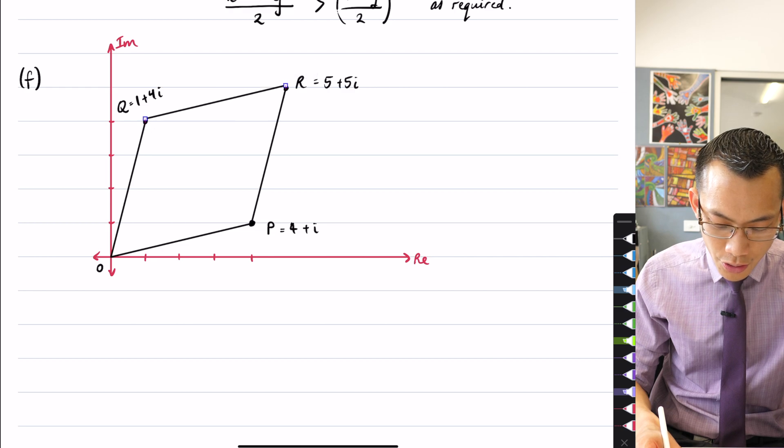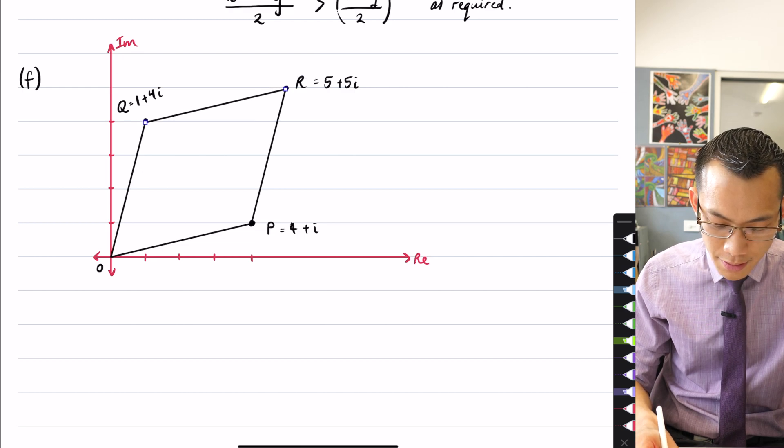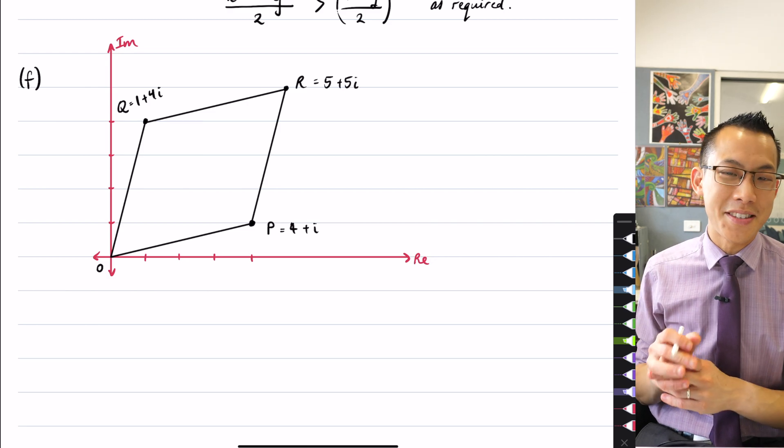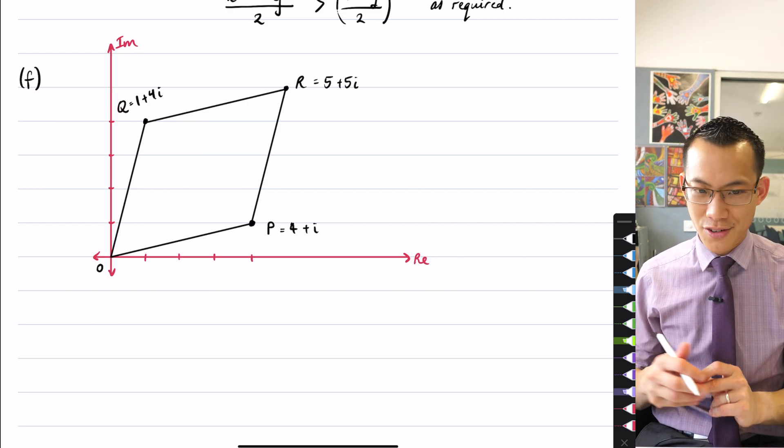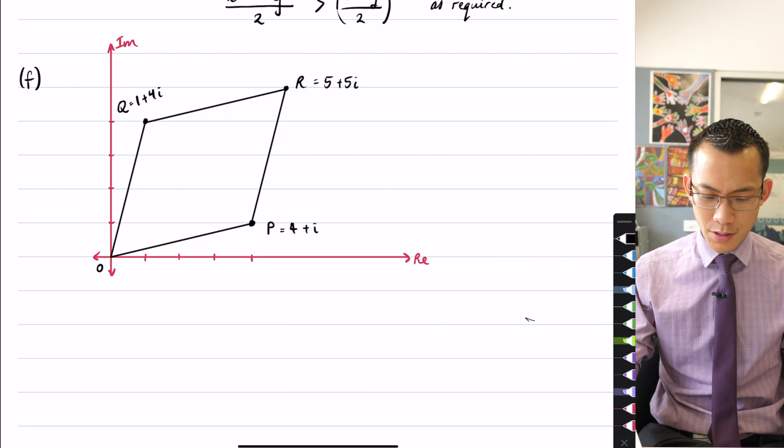Okay, so I want to show that this area is going to be 15 square units. A bunch of different ways to do this. I'm going to show you actually three methods for working out the area, and they each have their own attraction.